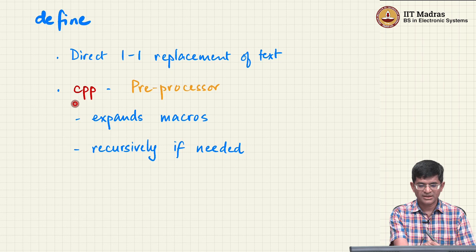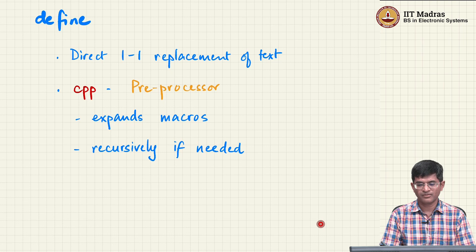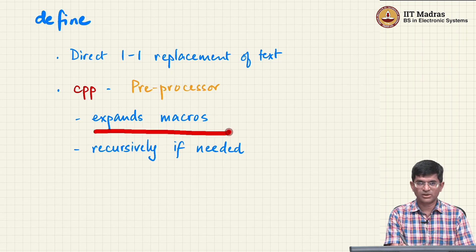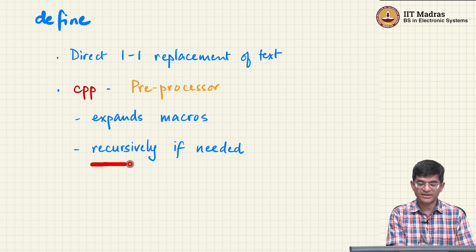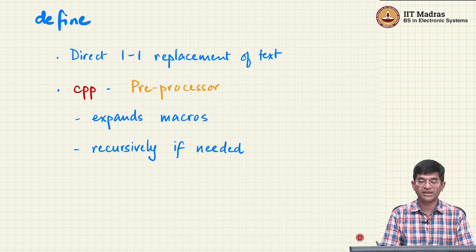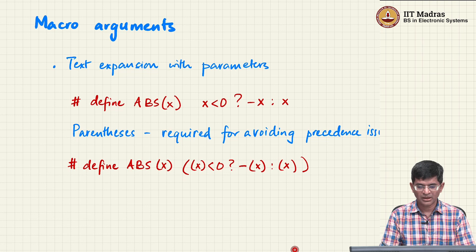CPP is the name of a program which we can actually run and this is the preprocessor. It expands macros. What exactly does macro expansion mean? As I mentioned earlier, it takes a piece of text and directly replaces that text with something else. It also does this recursively if needed and we will once again see what exactly that recursive expansion means by looking at some test cases later.